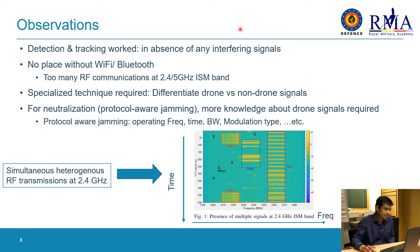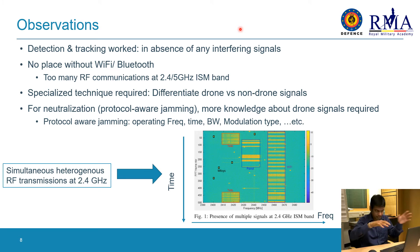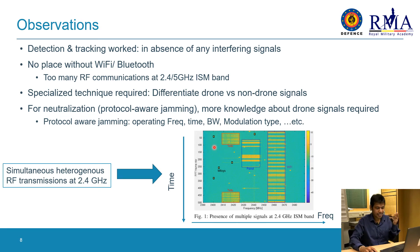Overall, our detection and tracking method worked quite well in the absence of any interfering signals. However, there is literally no place without Wi-Fi and Bluetooth, and too many communications happen at the 2.4 and 5 gigahertz ISM band — the same band where the drone and remote control signals operate. You have Wi-Fi, Bluetooth, and drone signals all happening simultaneously at the same band, as shown in this plot with WL Toys, Tailor drone, Parrot, and Wi-Fi signals.